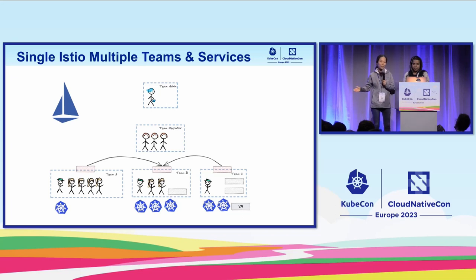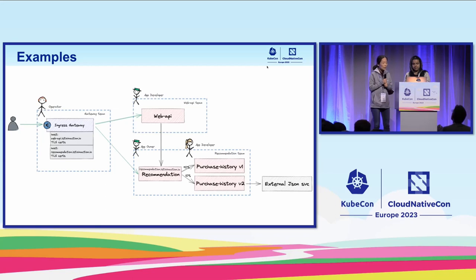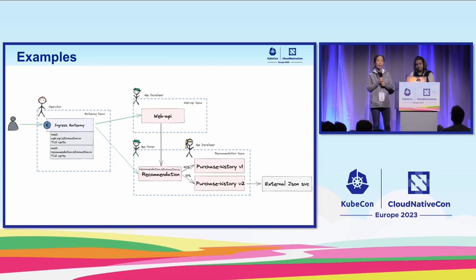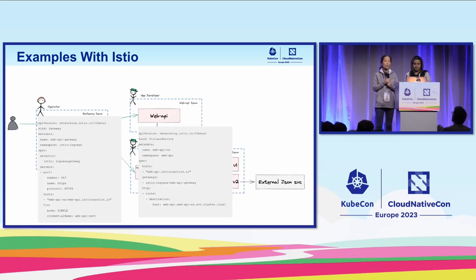You probably won't deploy in just one Kubernetes cluster. Typically, your team would have the boundary of multiple clusters, and some of your services may even run across different networks and also on virtual machines. Using a simple example with a couple of services — web API, recommendation, and purchase history — the web API is exposed to the Istio ingress gateway so that web API can be accessed by clients outside of the cluster.